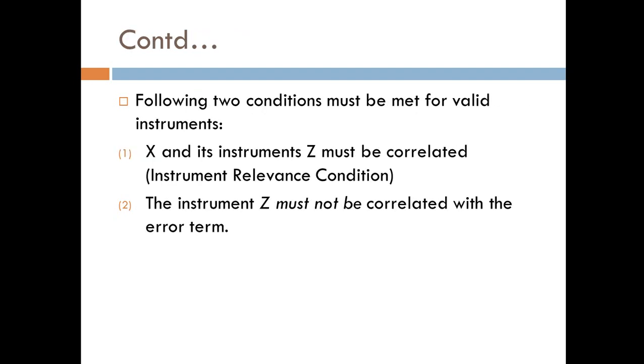Following two conditions must be met for valid instruments. Condition No. 1: X and its instruments Z must be correlated. That is also famous in terms of instrument relevance condition. Condition No. 2 says the instrument Z must not be correlated with error term.